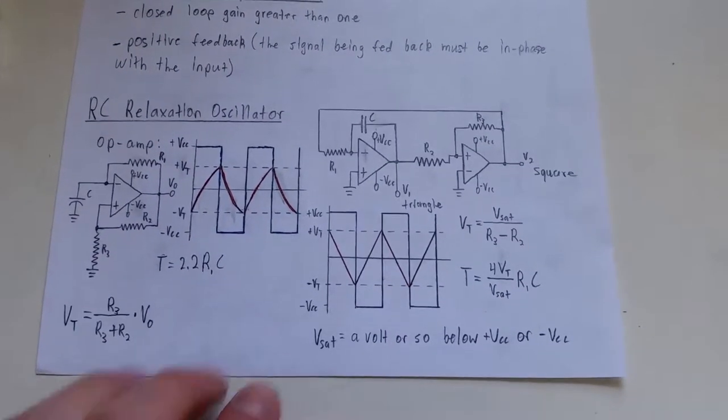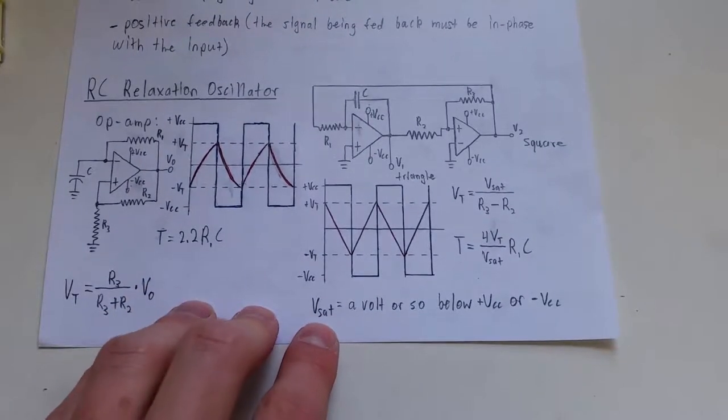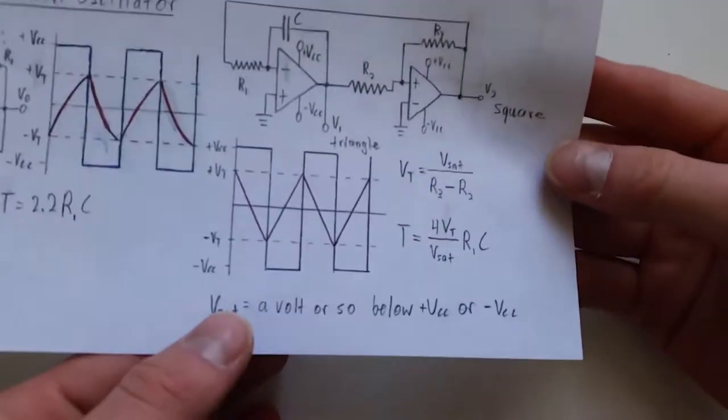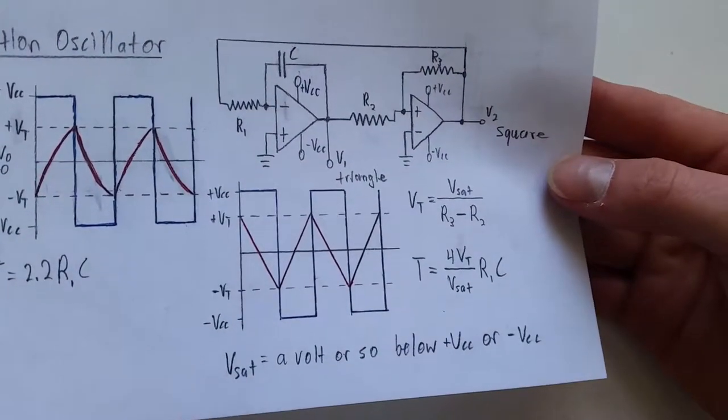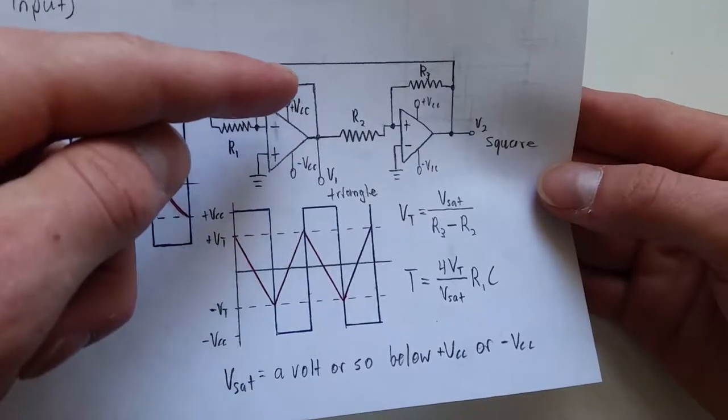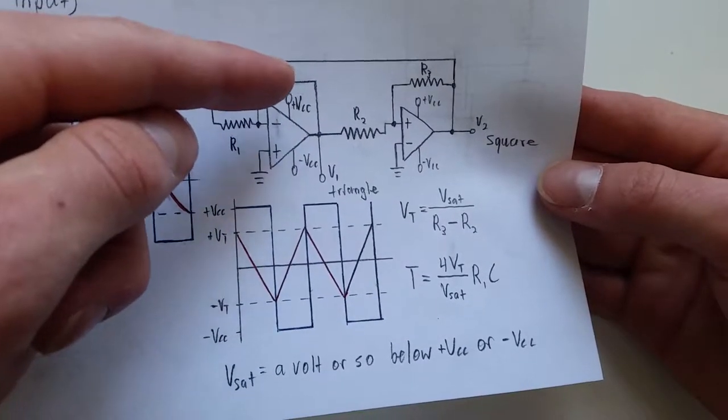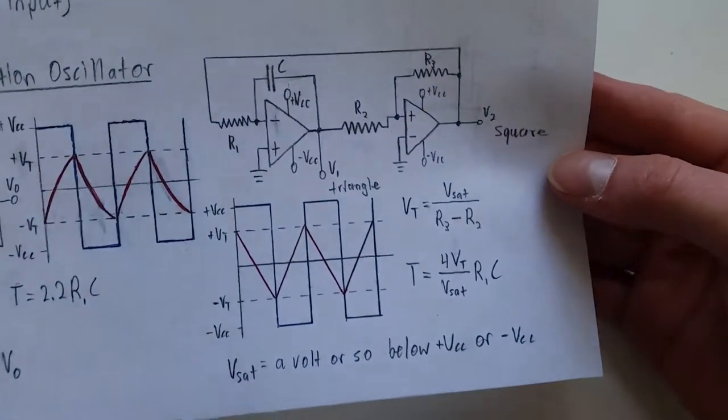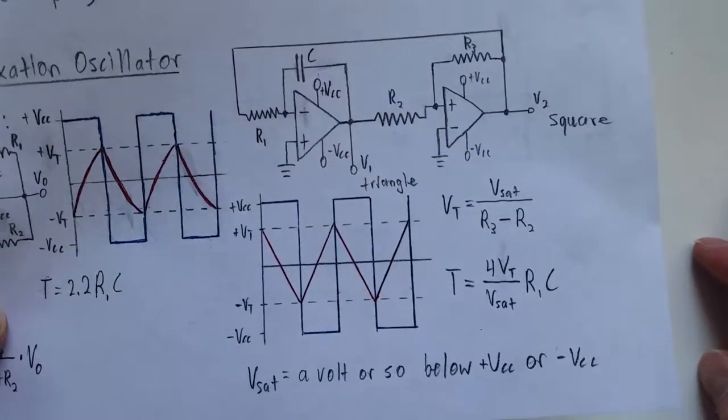Okay, so this thing also, the frequency of this also depends on the saturation voltage of the op amp, meaning how close can this output get to the power supply rail before it can't go anymore because of a transistor voltage drops or whatever.